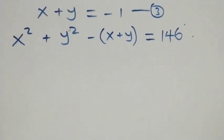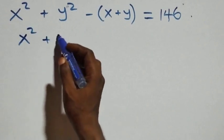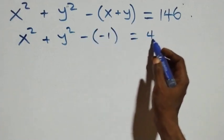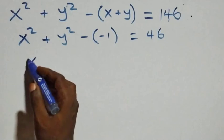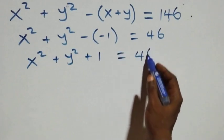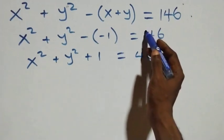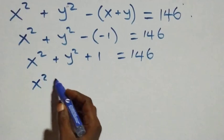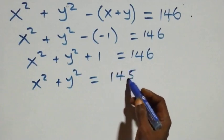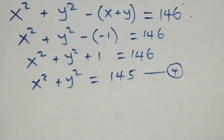Substituting x + y = -1, we get x² + y² - (-1) = 146, so x² + y² + 1 = 146. Taking 1 to the other side, x² + y² = 145. Let's label this as equation four.